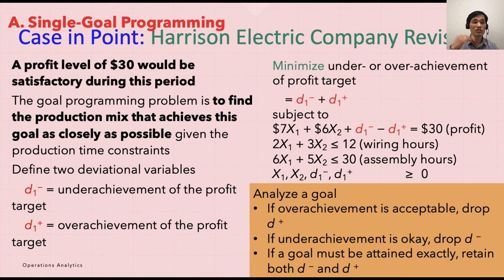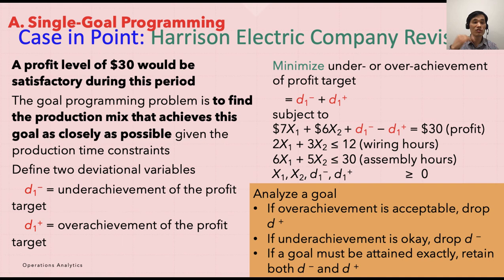To analyze a goal: if overachievement is acceptable, drop D1-plus. If underachievement is acceptable, drop D1-minus. You don't need to keep both variables if you're not concerned about one direction. But if both underachievement and overachievement are important, keep them both and run the analysis.